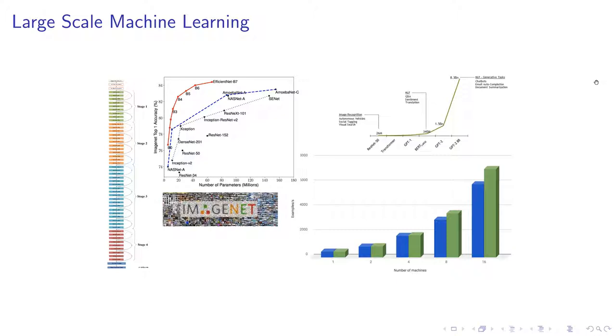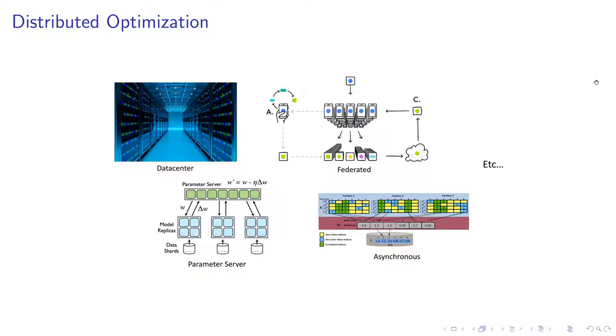In the past few years, we've seen machine learning grow both in terms of models and the datasets which are used to train these models. And this necessitates distributing the task of training these models, which is where distributed optimization becomes relevant.